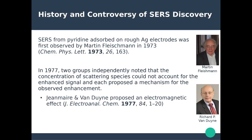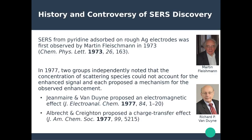The first enhancement mechanism was proposed by Richard Van Duyne at Northwestern University — in 1977 he proposed that there was an electromagnetic effect occurring at the surface of the silver electrode. The second enhancement mechanism, proposed by Creighton and colleagues, was a chemical mechanism — basically a charge transfer between the molecule and the metallic electrode. It turns out that both mechanisms are actually true and both exist, but the electromagnetic effect proposed by Van Duyne is the dominant mechanism compared to Creighton's charge transfer mechanism.